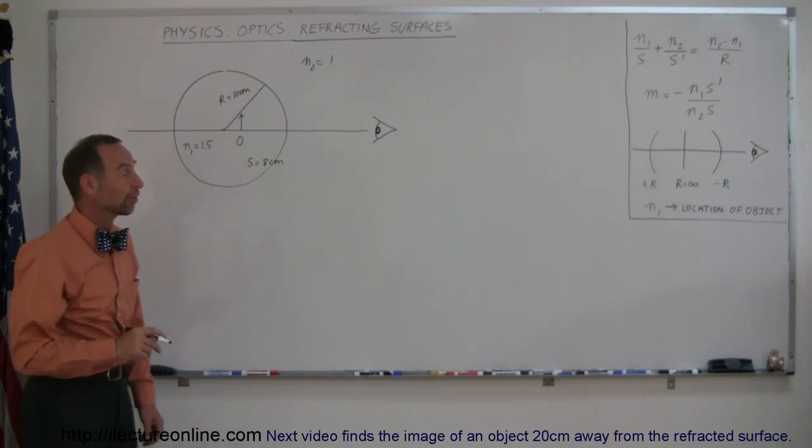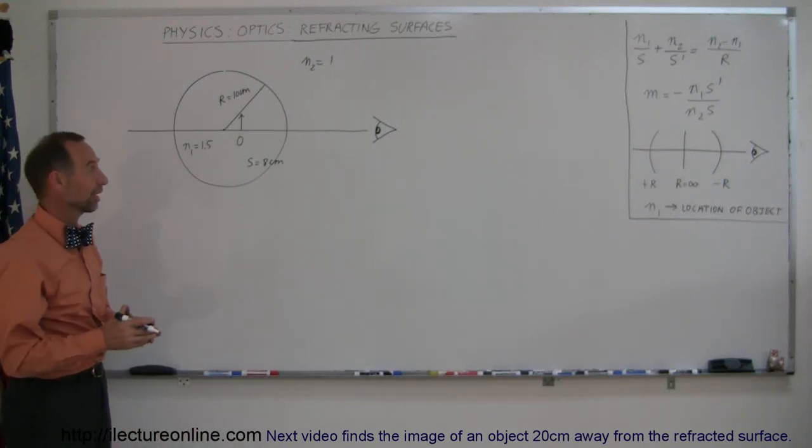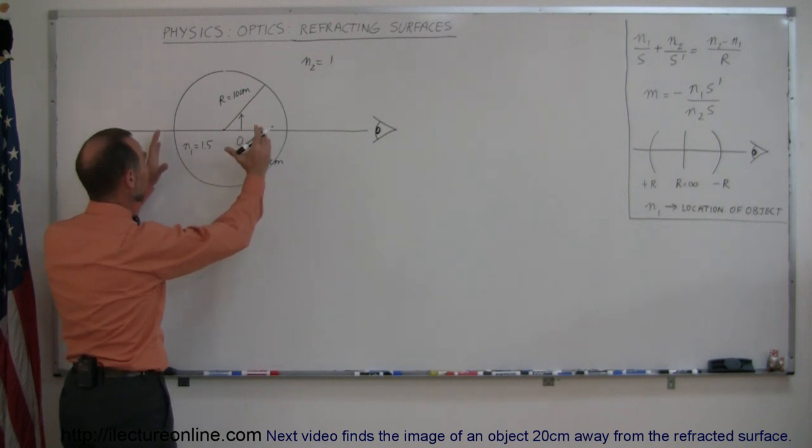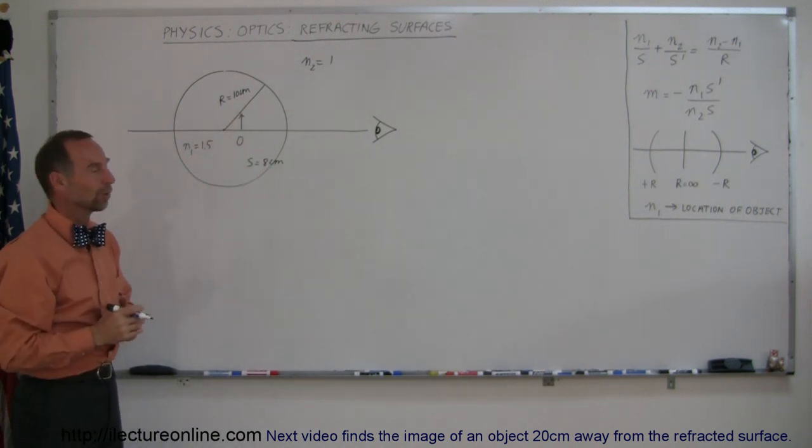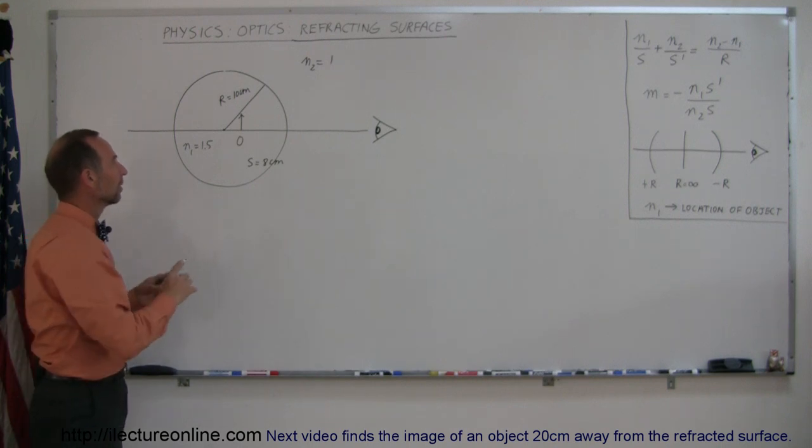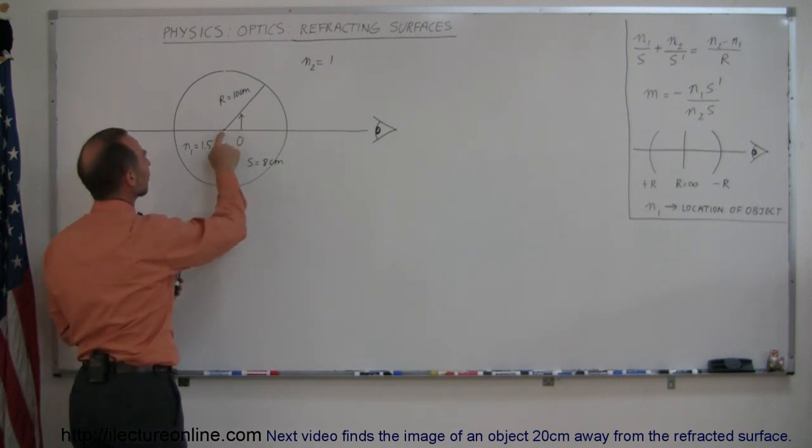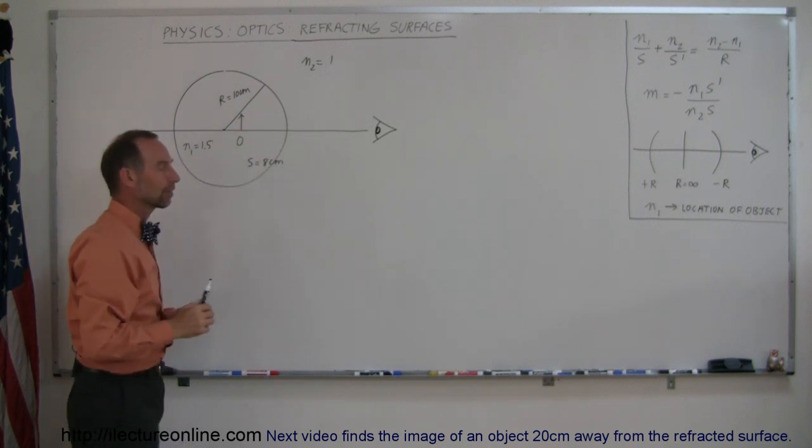The next example on refracting surfaces involves something kind of interesting. Let's say we have a glass sphere, radius is equal to 10 centimeters, index of refraction 1.5, and within it, about 2 centimeters away from the center, 8 centimeters away from the edge, we place an object.